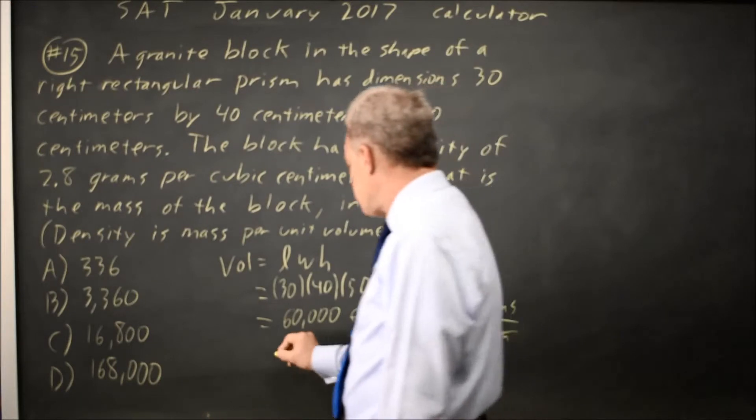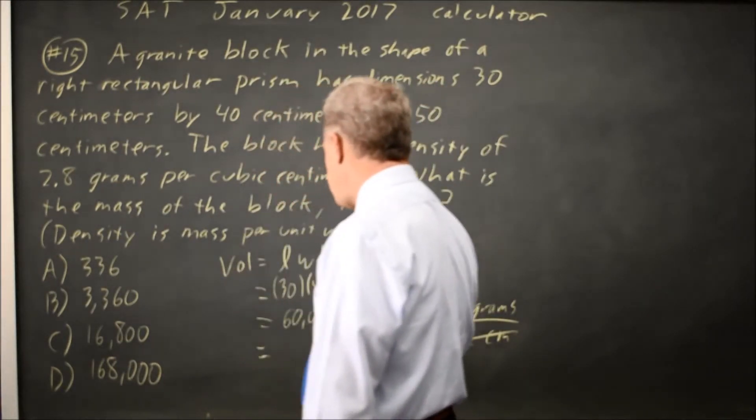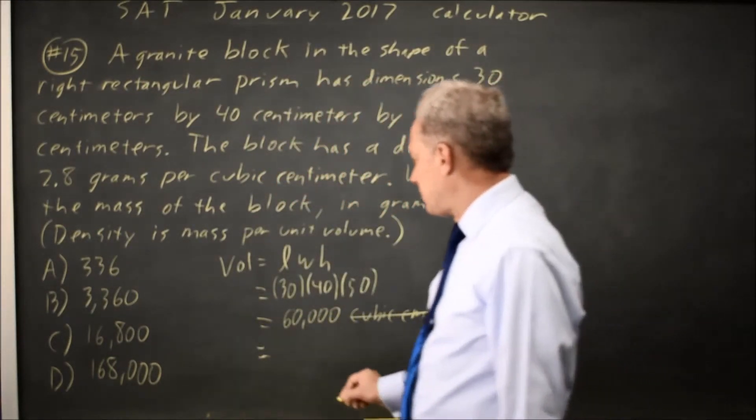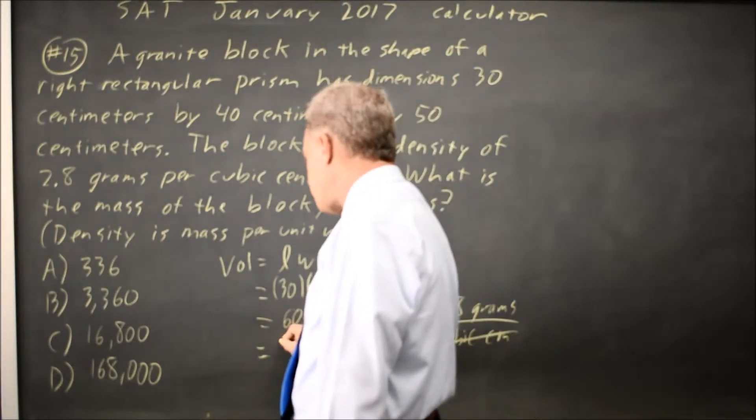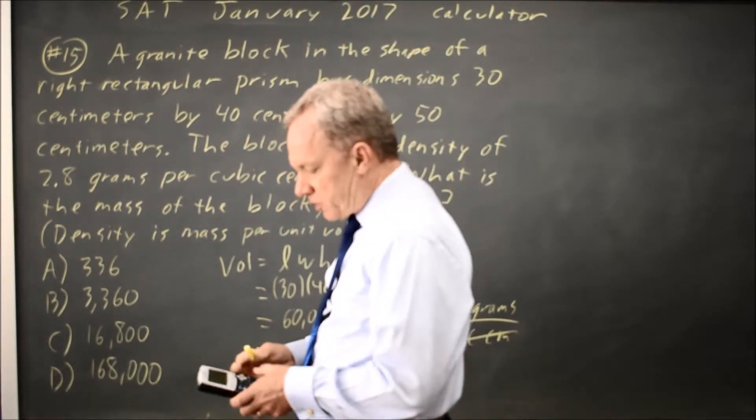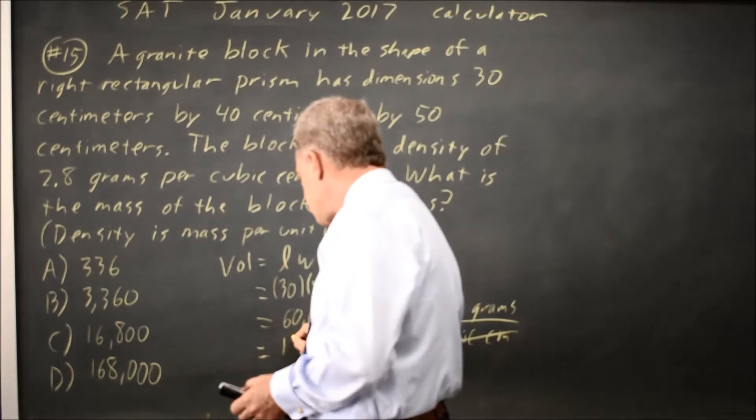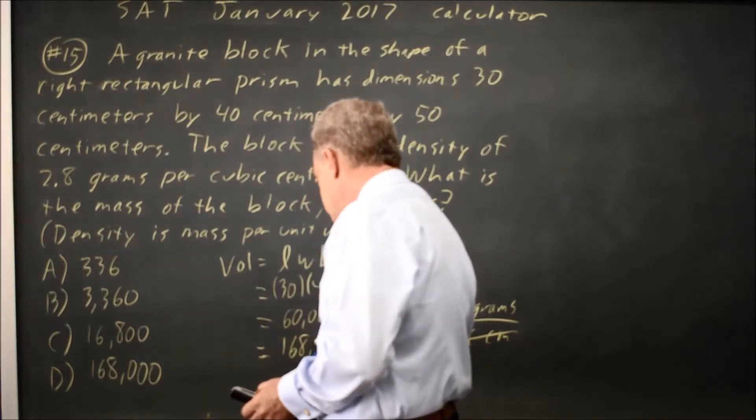So that tells us that we're multiplying, so it's 60,000 times 2.8, which is a little less than 3 times 60,000, a little less than 180,000, which on my calculator is 168,000.